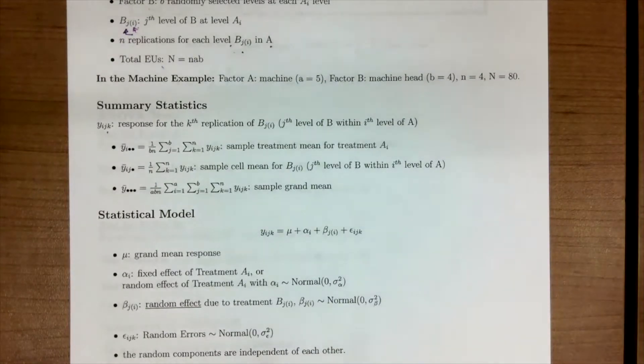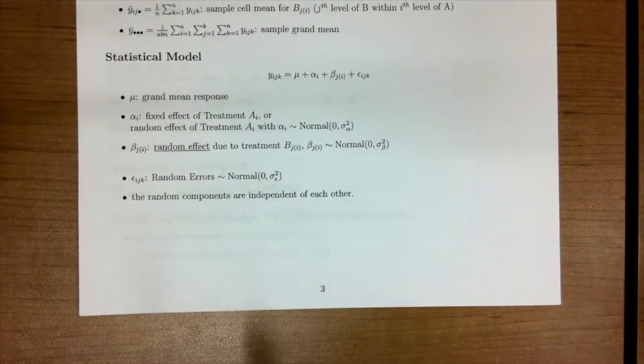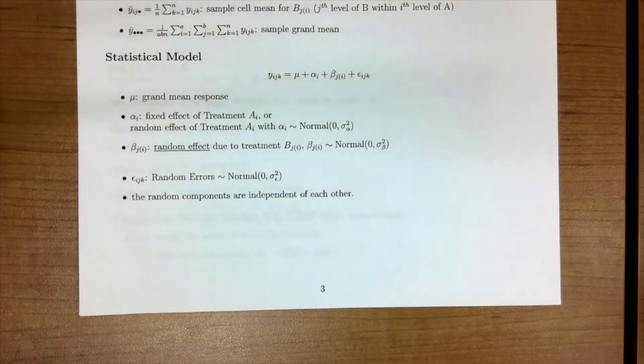Now, our statistical model, you might have thought before seeing this would look a little different and might have an interaction term, because we've talked about factorial designs that have had interaction terms. But that's not the case. In a factorial design, we have the ability to cross everything because we assume that the levels of A and B are identical. But in this case, we cannot cross everything because the levels of B are dependent on the level of A we're in.